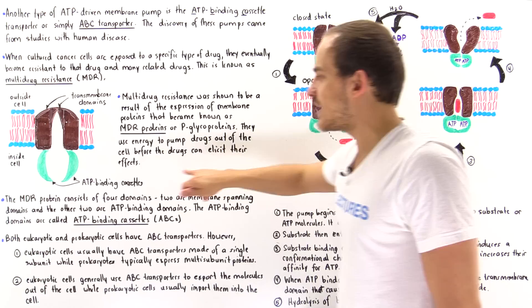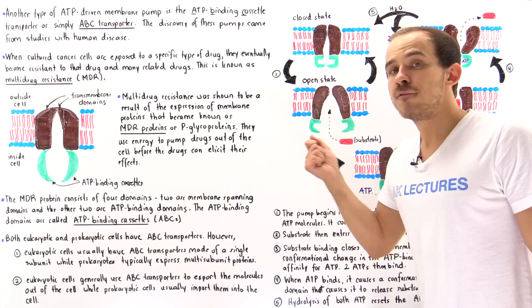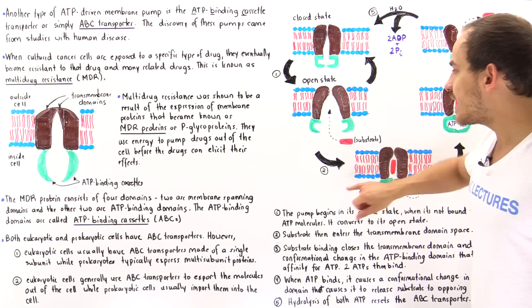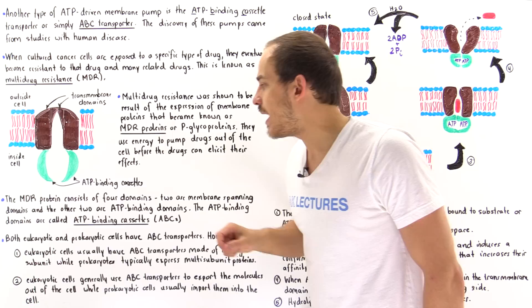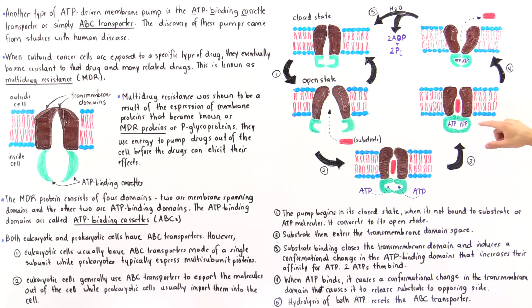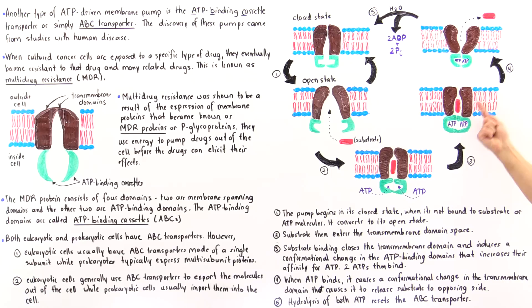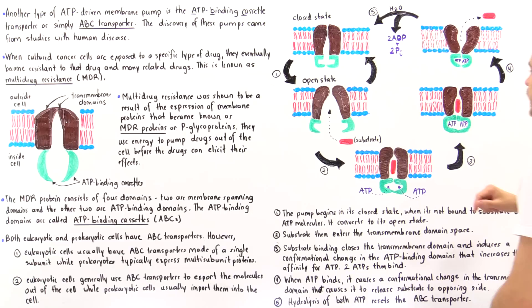Substrate entry also causes the two green domains — the ATP binding cassettes — to interact with one another, creating conformational changes in these two structures that increase their affinity for ATP molecules. Because there are two cavities on the ATP binding cassettes, two ATP molecules can fit into these two locations. Once the two ATP molecules move into position, that creates conformational changes in the entire transmembrane domain structure, inducing an opening on the opposing side of the membrane from where the molecule entered.